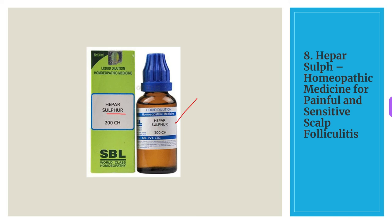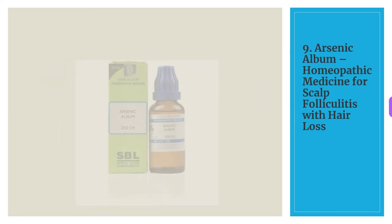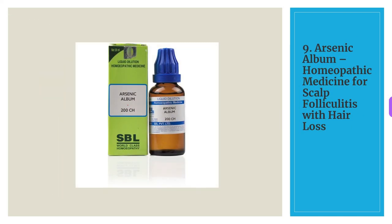The ninth and last homeopathic medicine for scalp folliculitis is Arsenic Album. Arsenic Album works well in cases where hair fall occurs along with scalp folliculitis, where hair fall is in circular patches and dandruff appears as dry scales.